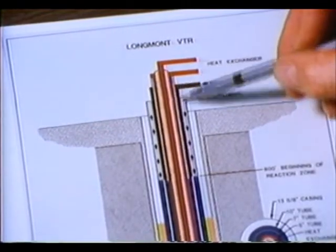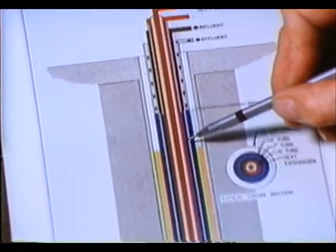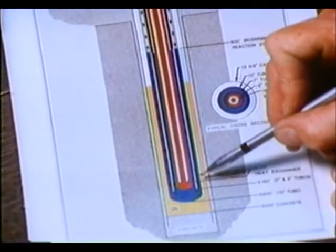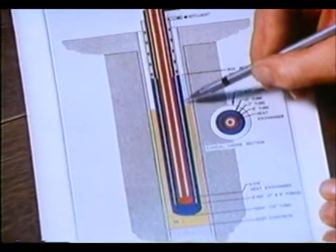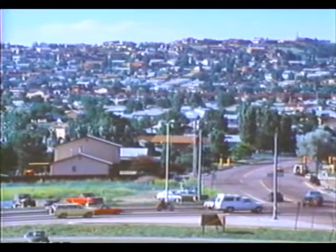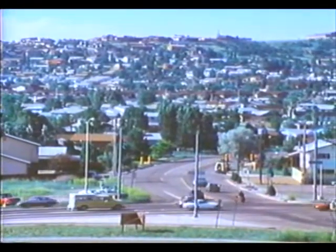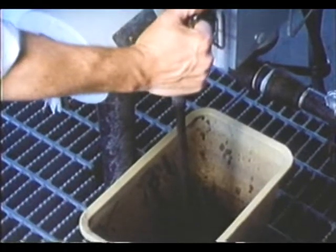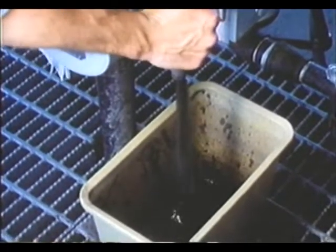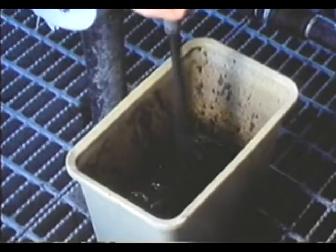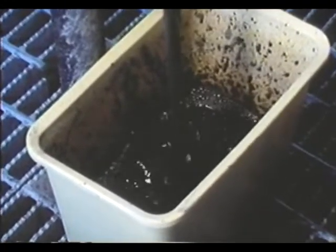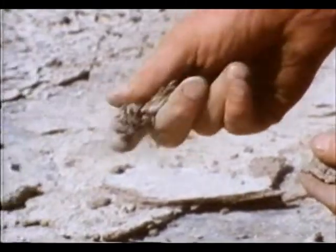Utilizing this below-ground natural pressure is more cost effective and far safer than above-ground mechanical pressurization. All of this can be accomplished in a fraction of the ground space generally needed for conventional systems. The VTR, therefore, has dramatic advantages in locations where land is limited or expensive. This is a highly concentrated sludge, posing a serious threat to the environment. After 45 minutes, VTR technology has converted it to a sterile, harmless ash.